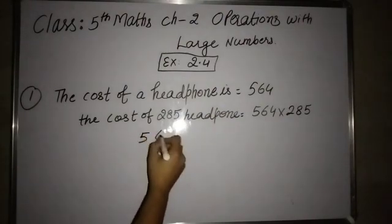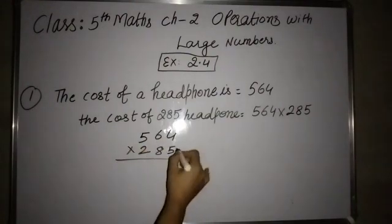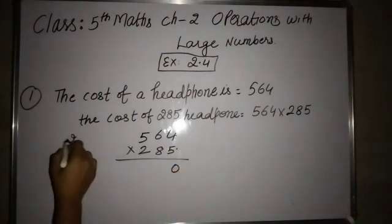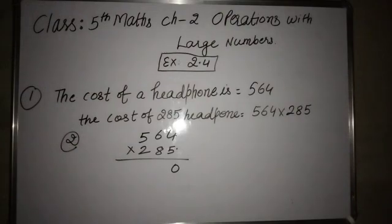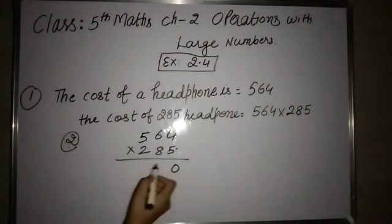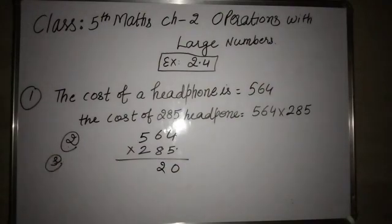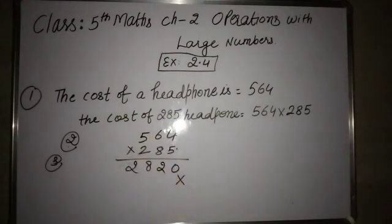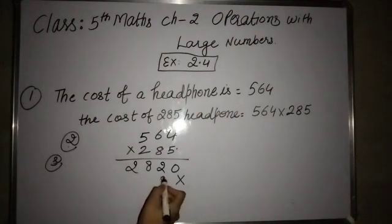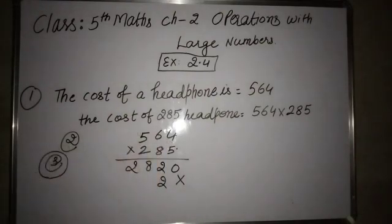We multiply 564 by 285. Starting with the ones digit: 5 × 5 = 25, so zero here and 2 carry. Then 5 × 6 = 30, plus 2 carry gives 32, so 2 here and 3 carry. Then 5 × 4 = 20... wait, 5 × 5 = 25, plus 3 is 28. So 8, carry 2. Next, 8 × 6 = 48, plus carry 3 = 51, so 1 here carry 4 — continuing the multiplication.